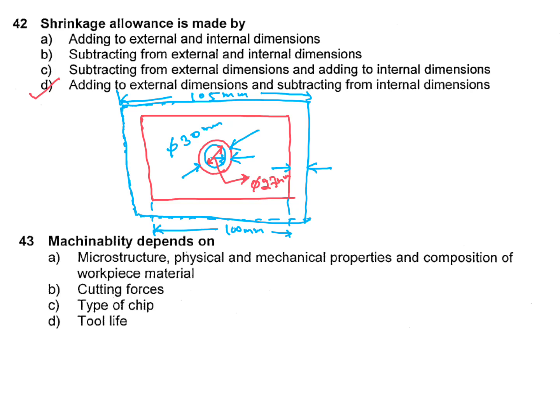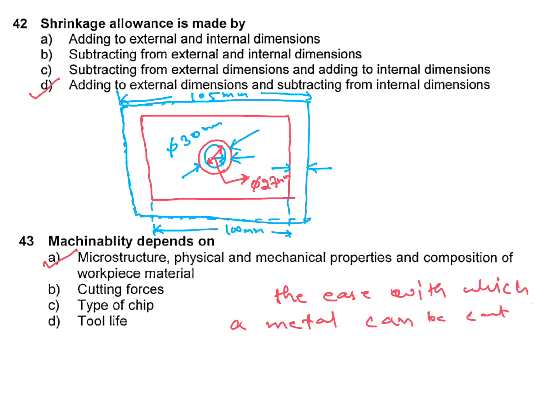Machinability depends on: A — microstructure, physical and mechanical properties, and composition of workpiece material; B — cutting force; C — type of chip; D — tool life. Answer is A. Machinability depends on microstructure, physical and mechanical properties, and composition of workpiece material. Machinability is the ease with which a metal can be cut or machined.